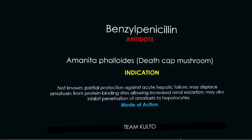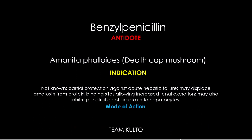First antidote: Benzyl Penicillin. This is indicated for Amanita phalloides poisoning, commonly known as death cap mushroom poisoning. Mode of action: not fully known, but it provides partial protection against acute hepatic failure. It may displace amatoxin from protein binding sites, allowing increased renal excretion, and may also inhibit penetration of amatoxin into hepatocytes.